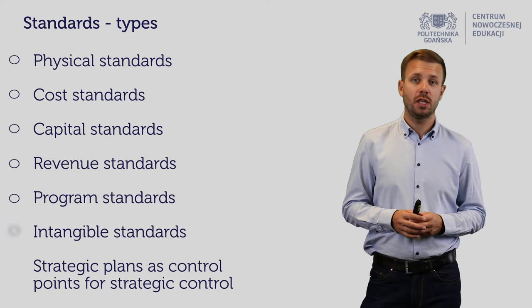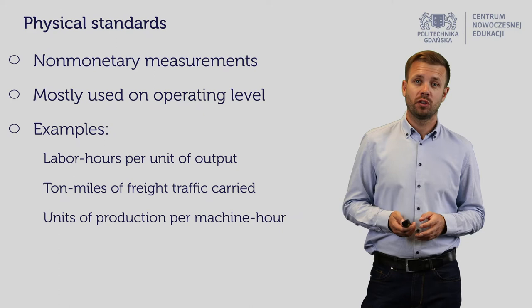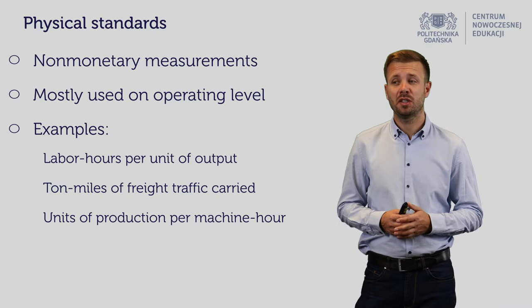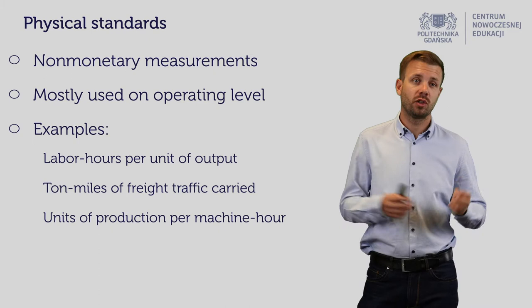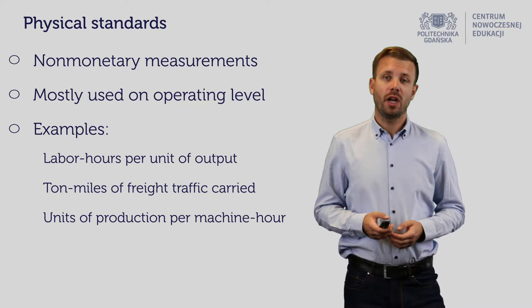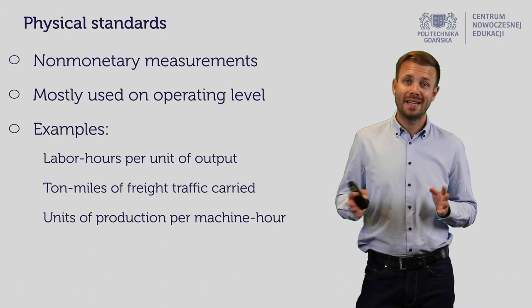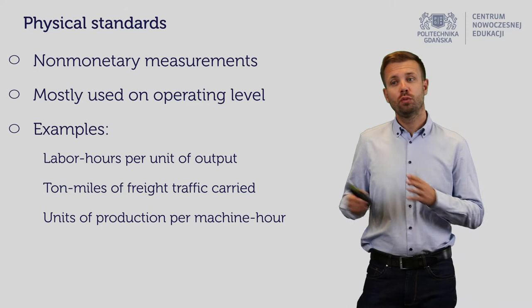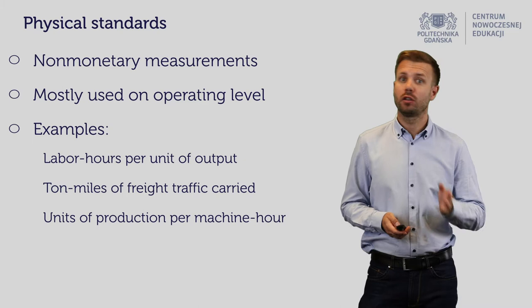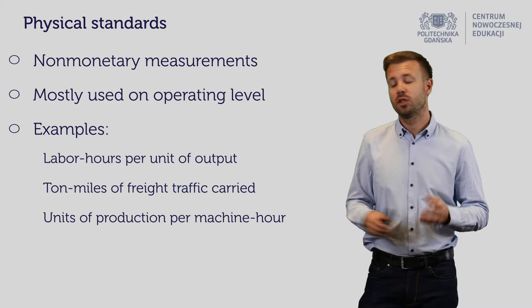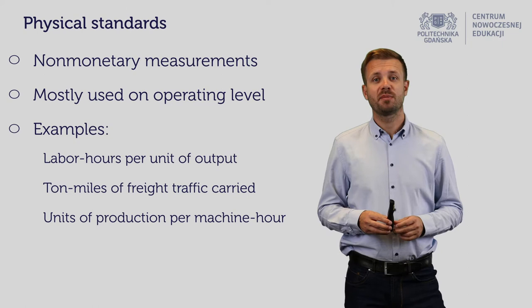Let's start with physical standards. Physical standards are non-monetary measurements, which practically means these are ones in which you don't use currencies when presenting them, and you mostly use them at the lower level of the organizational structure. Examples include labor hours per unit of output — for instance, you need 150 labor hours to produce a certain car — or ton-miles of freight carried by train or truck, or units of production per machine hour, such as one machine producing 126 pieces of product A.